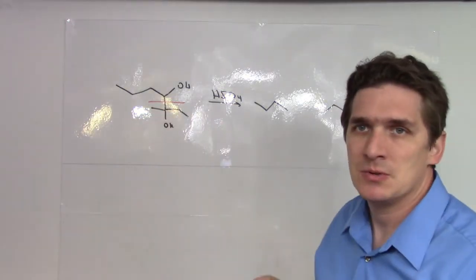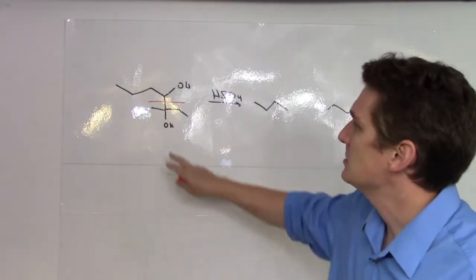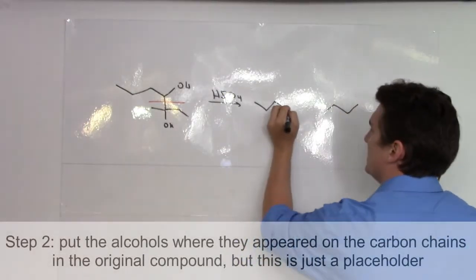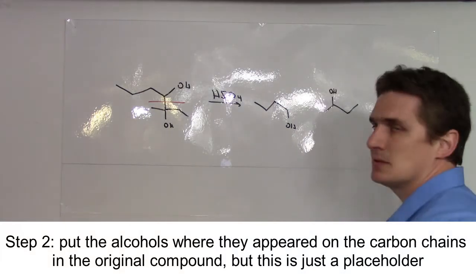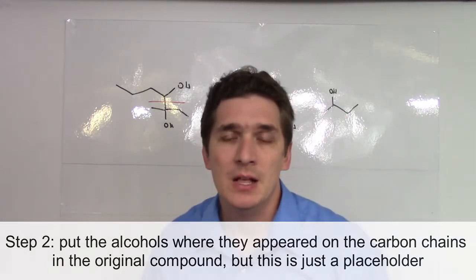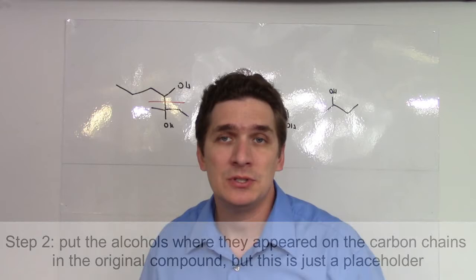Now let's put these OH groups back, but we're just going to put them back as a placeholder. So on this one, the OH group ends up on the end. And on this one here, the OH ends up on the secondary carbon. This is not the product. You don't end up with the two alcohols.